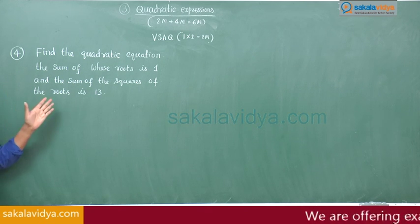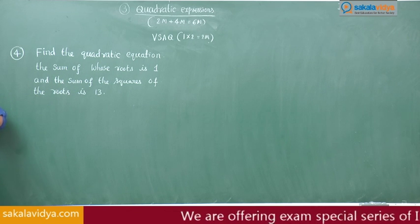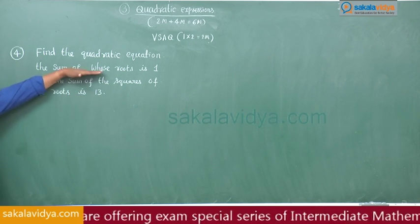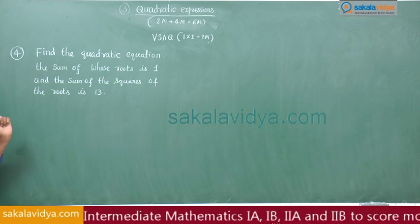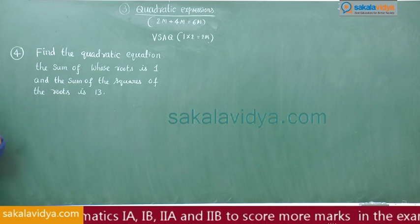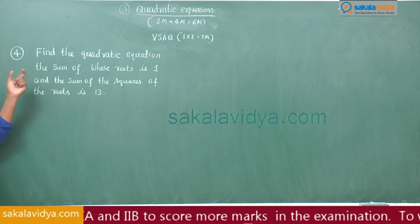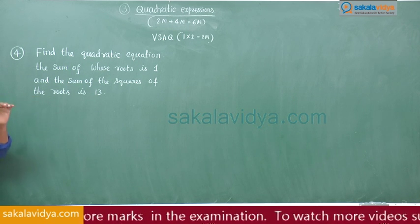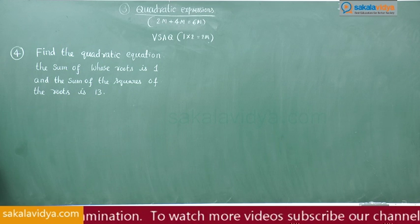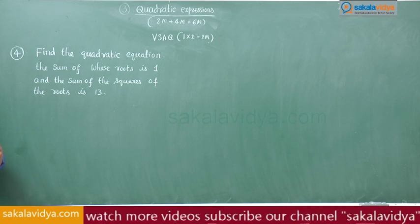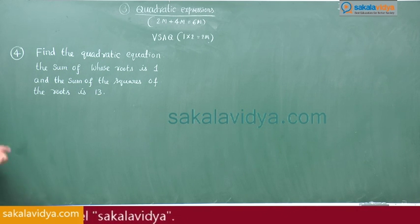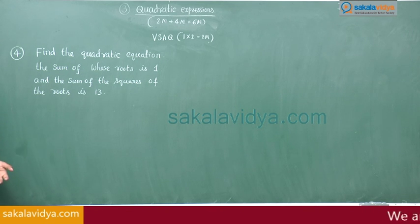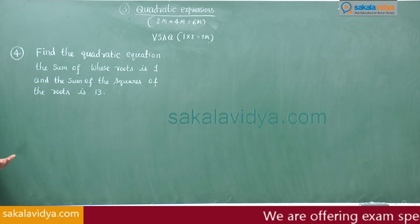Let alpha and beta be the roots of this equation. The sum of the roots, alpha plus beta, is equal to 1 as given. As we know alpha plus beta and alpha square plus beta square, let us think — can we find alpha beta? If we know alpha beta, then we can find the quadratic equation using the formula: x squared minus (alpha plus beta) times x plus alpha beta equals 0.